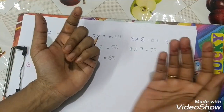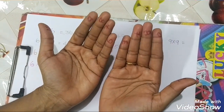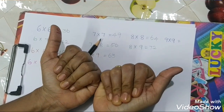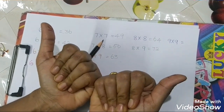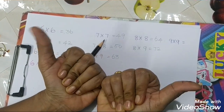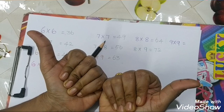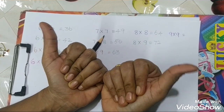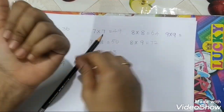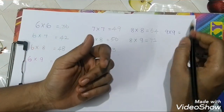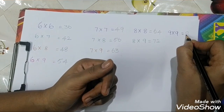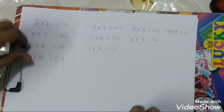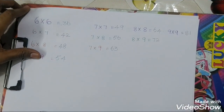For 9 times 9: both hands show finger 9. The closing finger value is 80. Open fingers: here 1 and here 1. So 1 times 1 equals 1. Then 1 plus 80 equals 81. So 9 times 9 are 81. This is the first method.